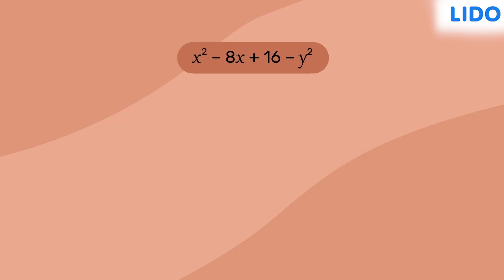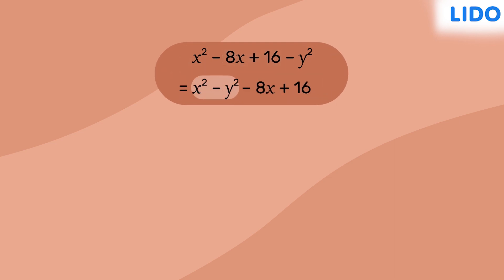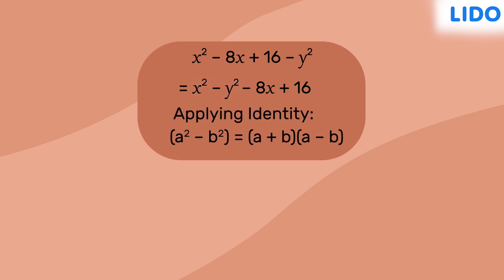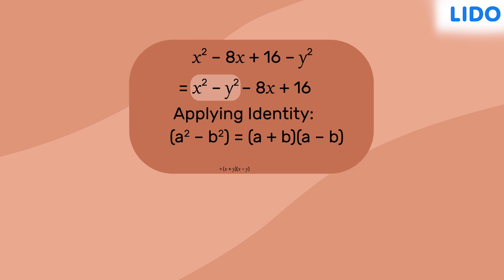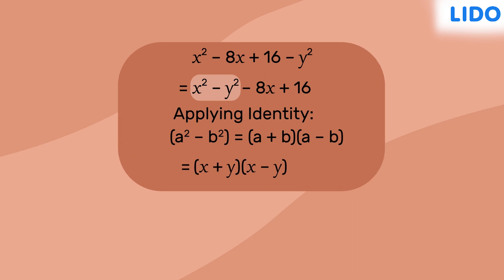Let's factorize this expression. In our first attempt, we'll group both the perfect squares together in one group and the other two terms in another group. For the group of perfect squares, we can apply the identity a² − b² = (a + b)(a − b). Hence, x² − y² gets factorized to (x + y)(x − y).